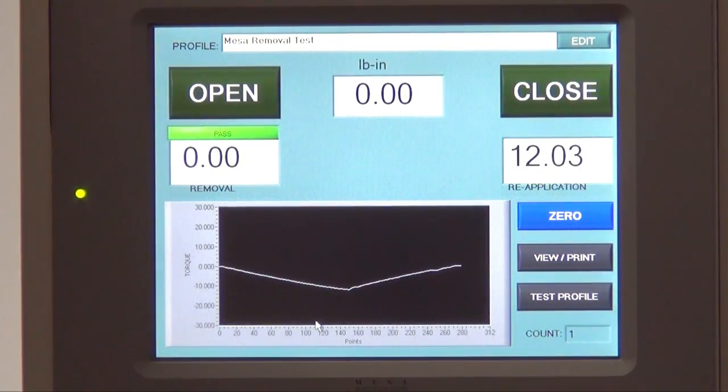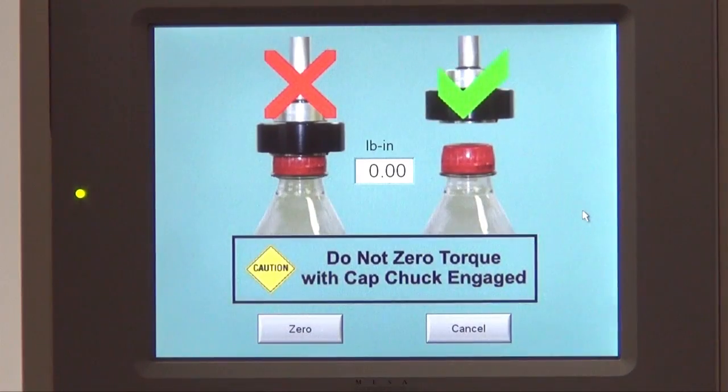Once the bottle is secure in the vise, you are now ready to zero out the system to account for any preloaded torque. Hit the blue zero tab. It will then give you instructions to make sure that the EDM chuck is not secure on the bottle cap. At this point, you just simply click zero.